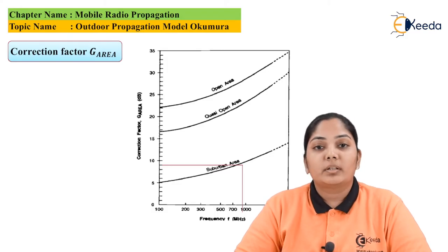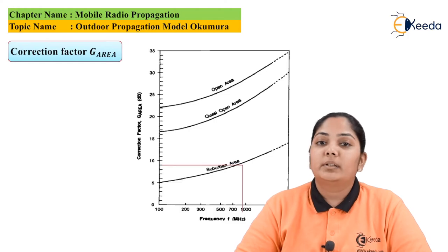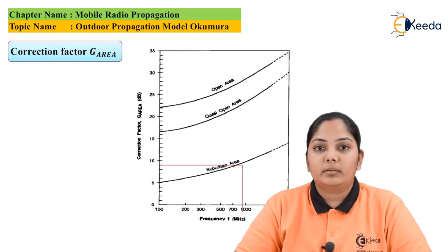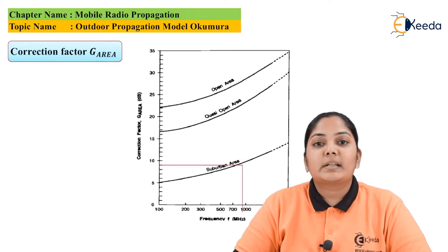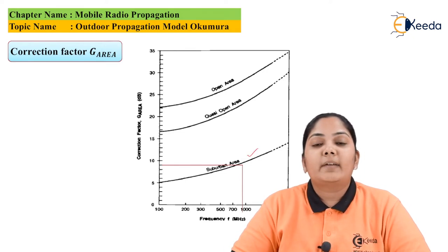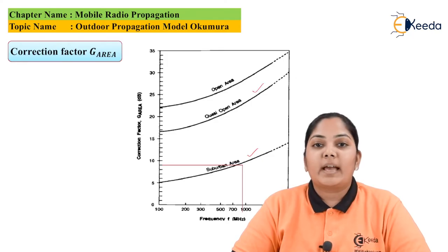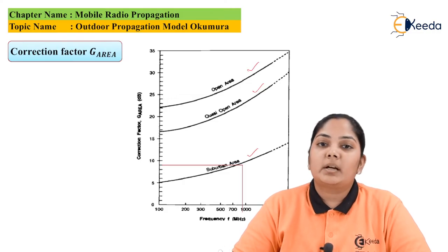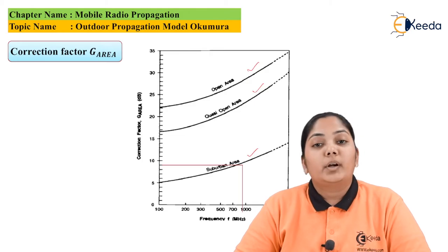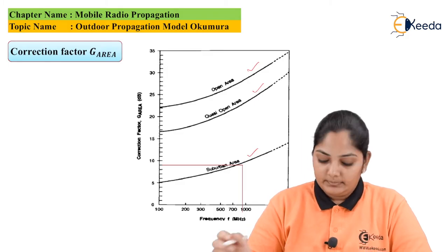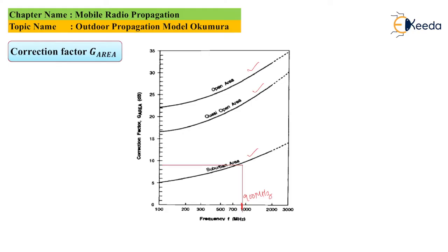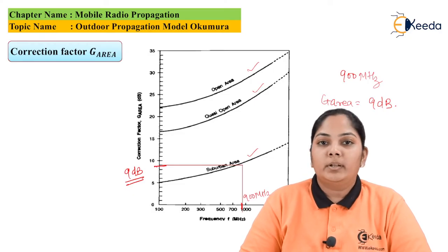The correction factor G(area) is found from a graph where the x-axis is frequency and the y-axis is the correction factor. There are three curves representing different area types: suburban area, open quasi area, and open area. For 900 MHz in the suburban area, the G(area) correction factor comes out to 9 dB.